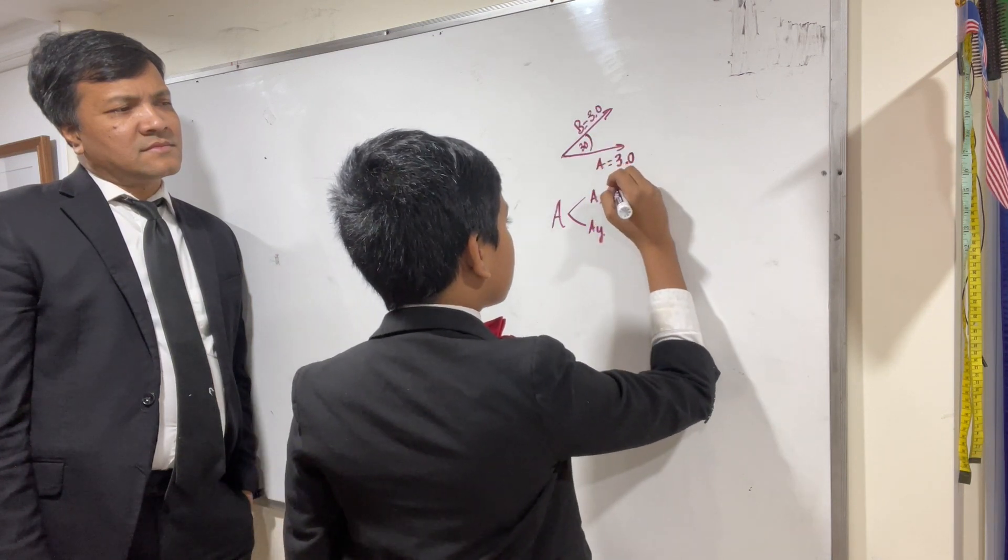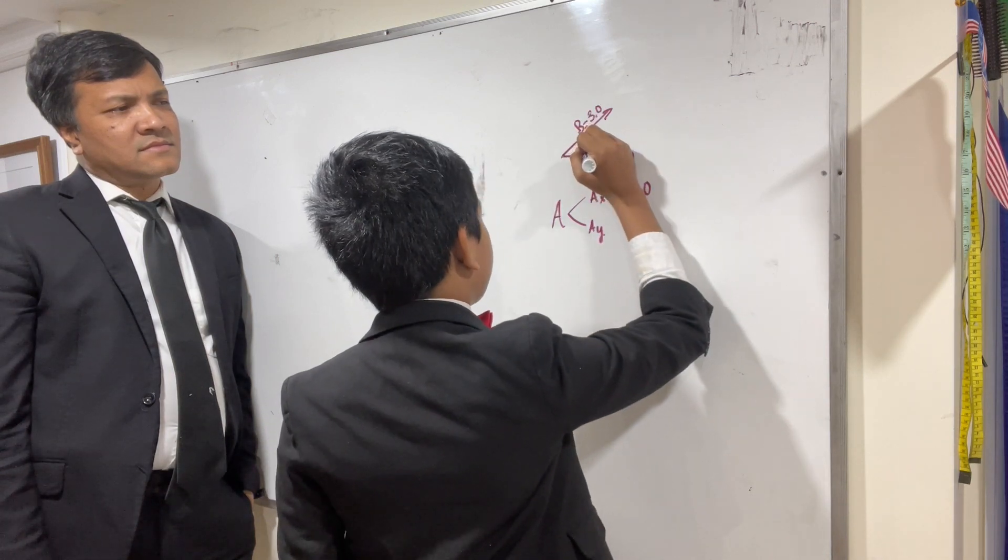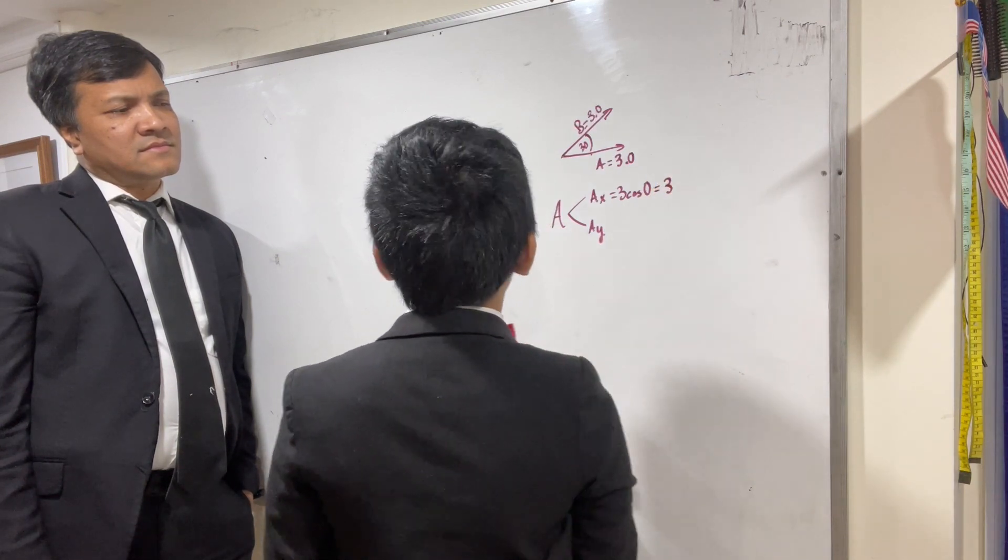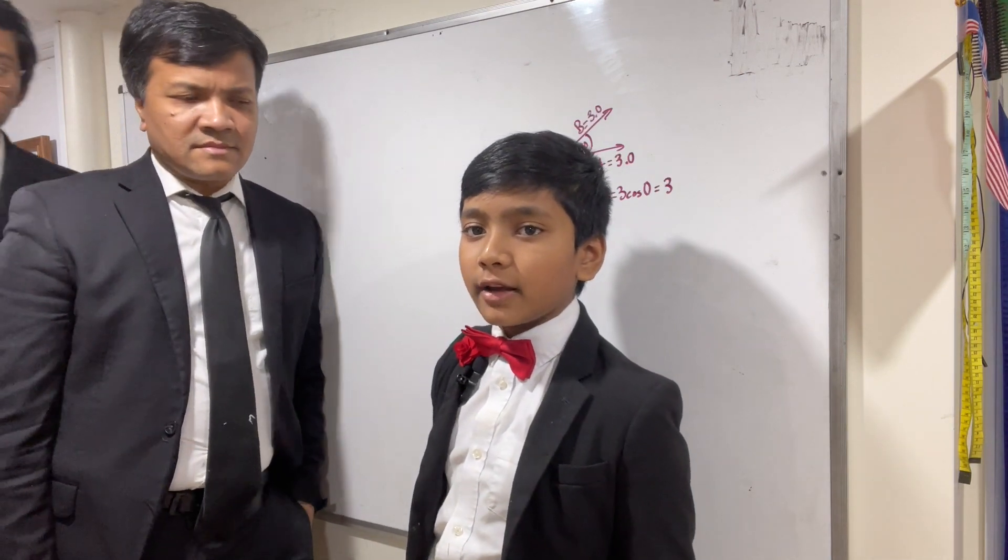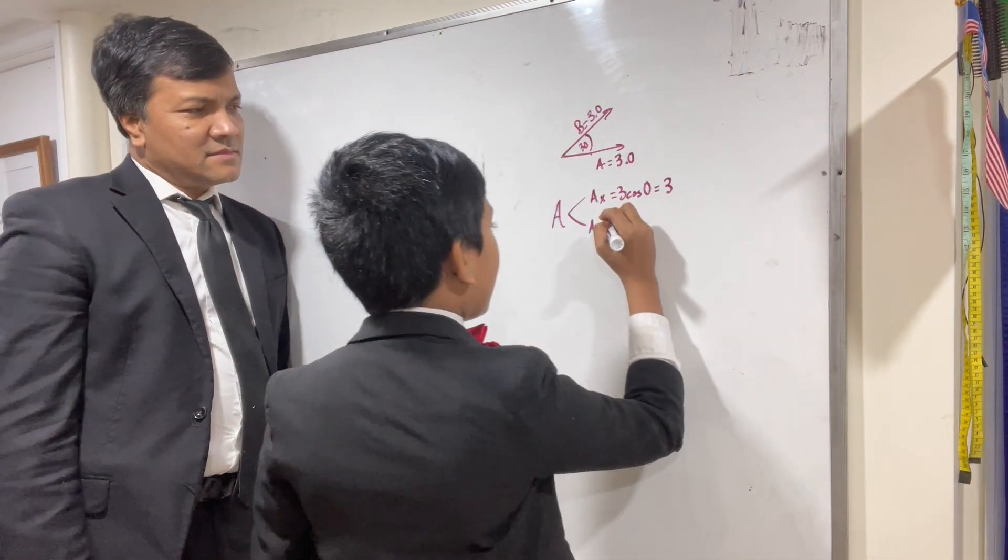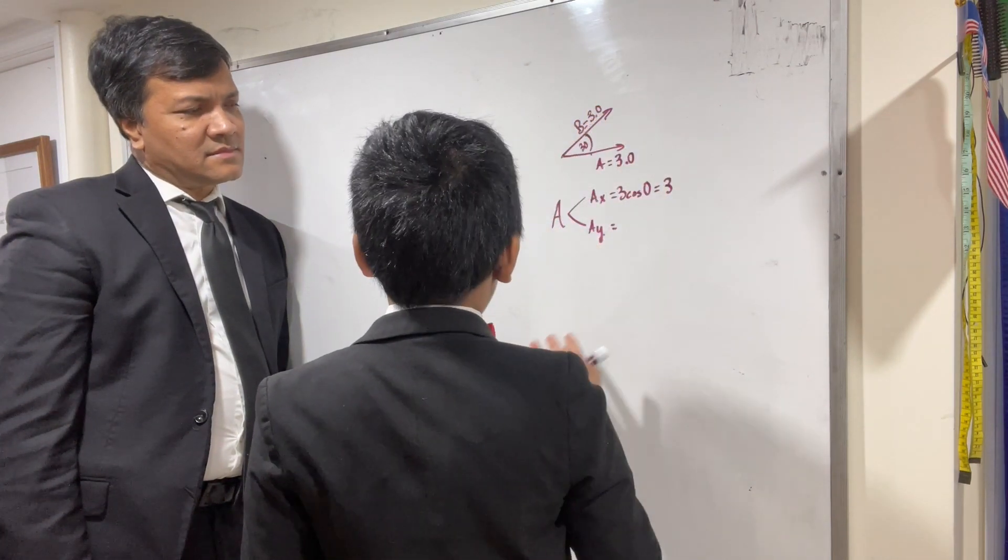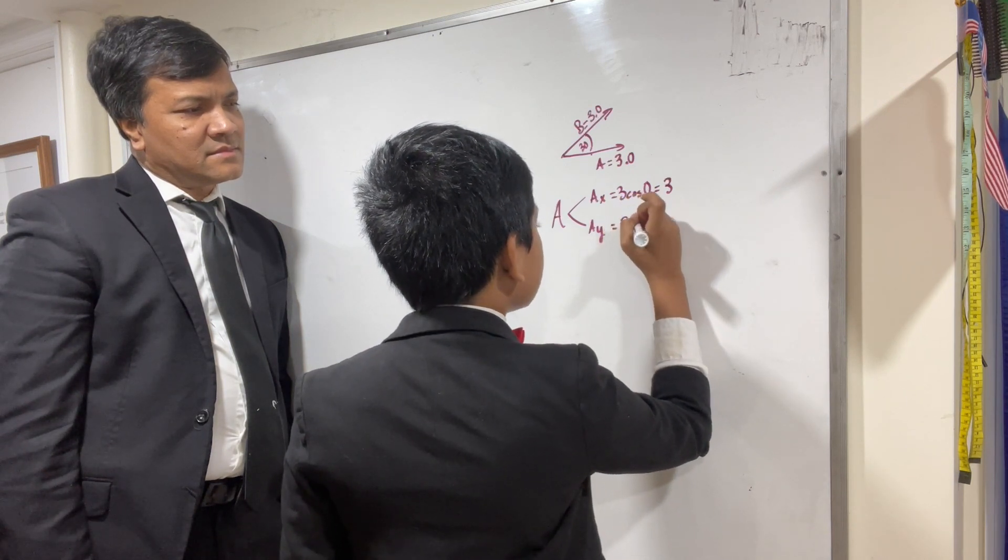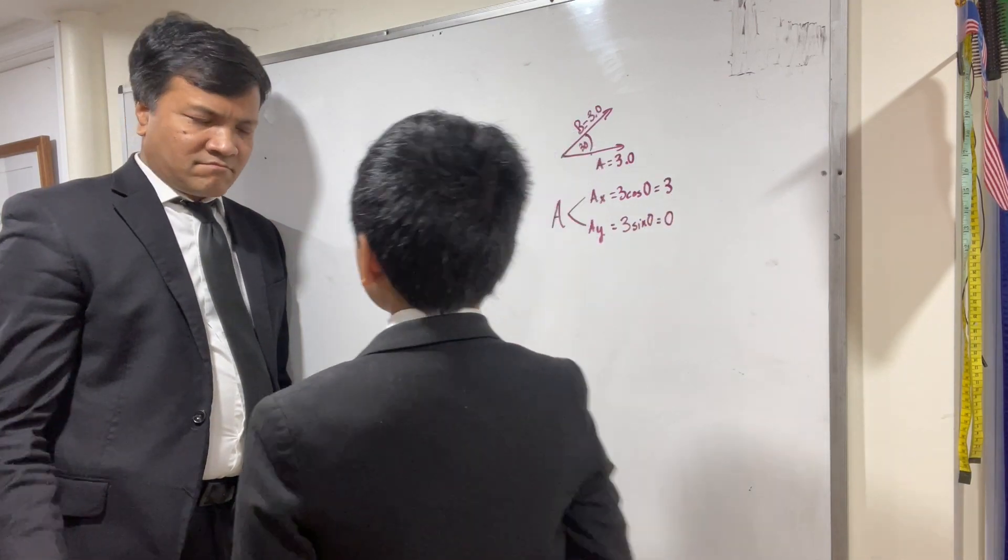Ax is going to be three cosine zero, because the angle between it and the horizontal is zero. So that's going to be three. And by the way, remember, whether you use cosine or sine depends on if the angle is opposite or adjacent to your side. And Ay, because the angle of zero is opposite to the y component, we would use three sine zero, which gives us zero.